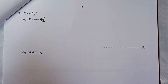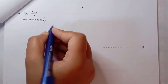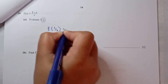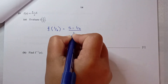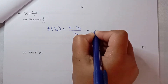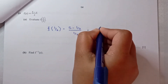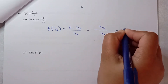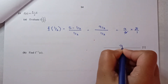Question number 19: f(x) is given. Evaluate f(1/2) by substituting x equals 1/2: f(1/2) equals (5 minus 1/2) divided by (1/2) equals (9/2) divided by (1/2) equals (9/2) times 2 equals 9.